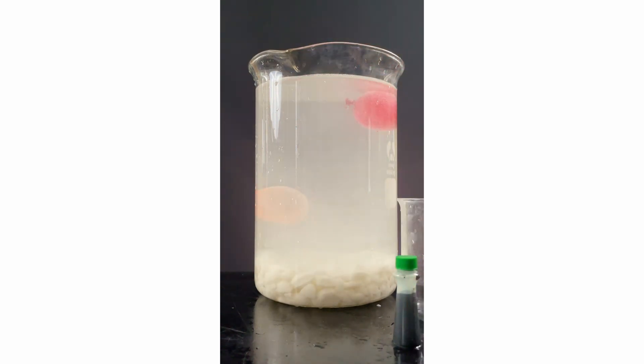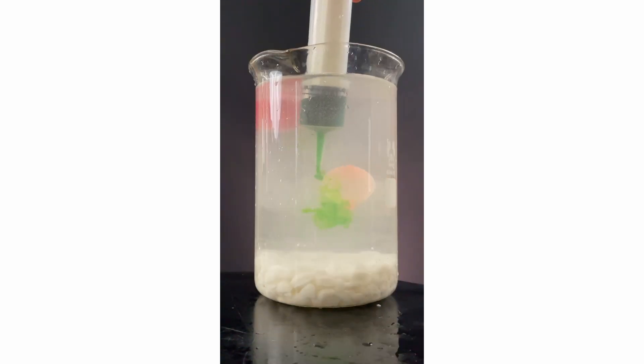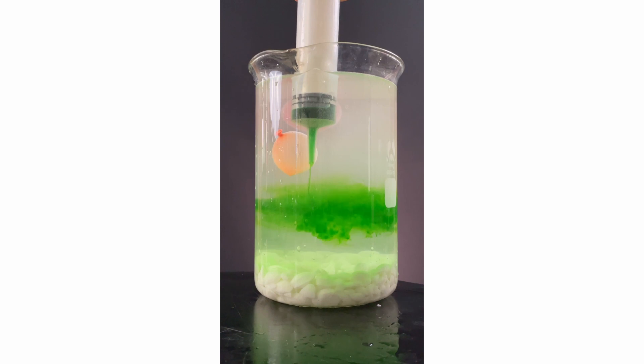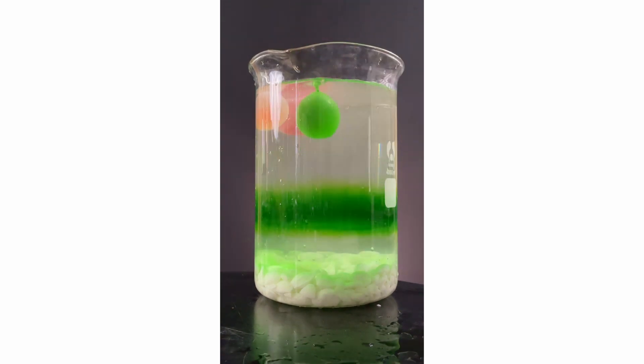Get a new jar and green food coloring. Take some solution near the orange balloon and put it in the jar. Add the food coloring and slowly pump it back in. It stays trapped for some reason in this band. Take solution from the band, add it to a balloon, and we see the balloon floats in the green band.